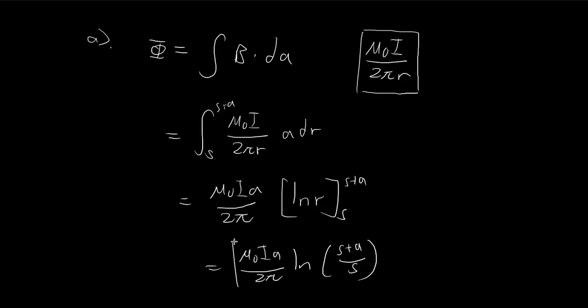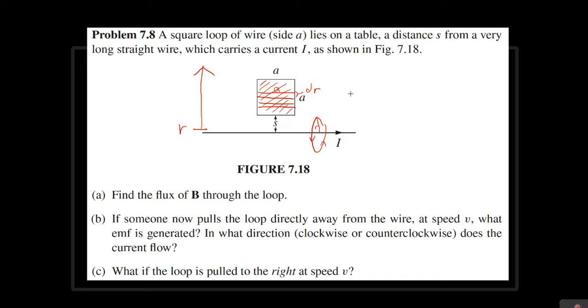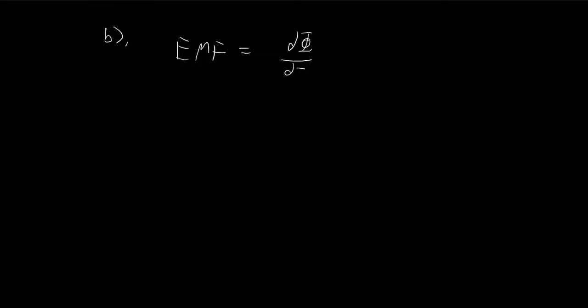Now in part B, we need to find the EMF. The square is being pulled in this direction, there's going to be a change in flux, and that's going to result in an EMF, which results in a current. The EMF is going to be the change in flux with respect to time. I'm going to use an absolute value here — the negative sign relates to the direction of current, but right now I'm just concerned with the magnitude.